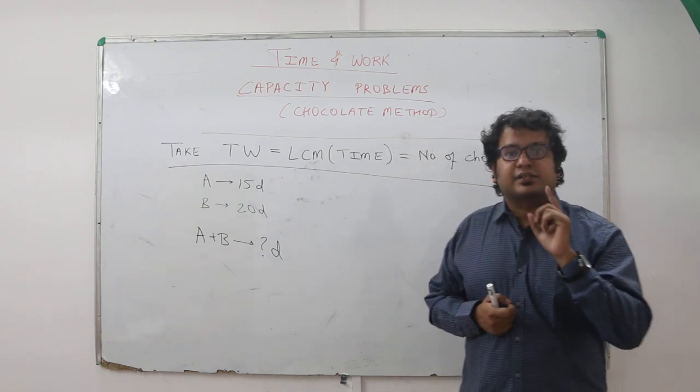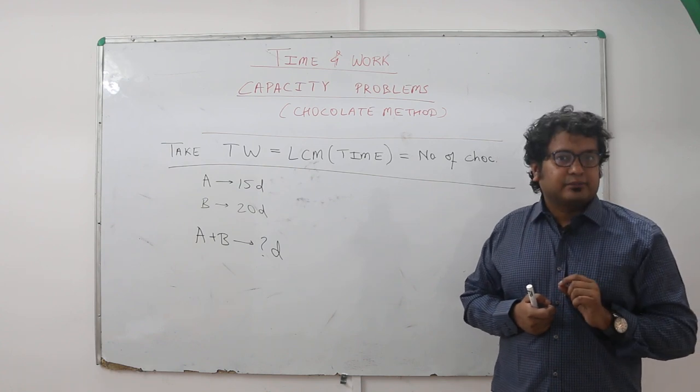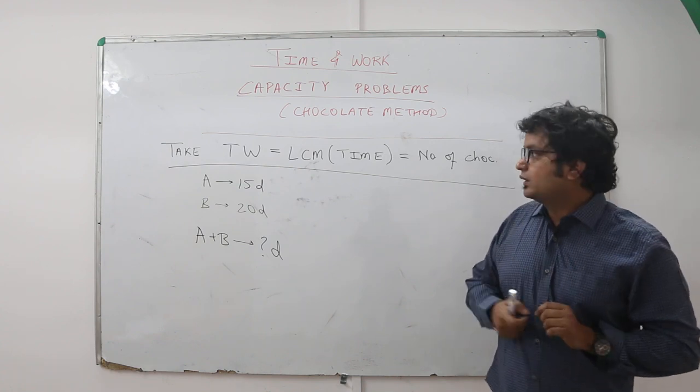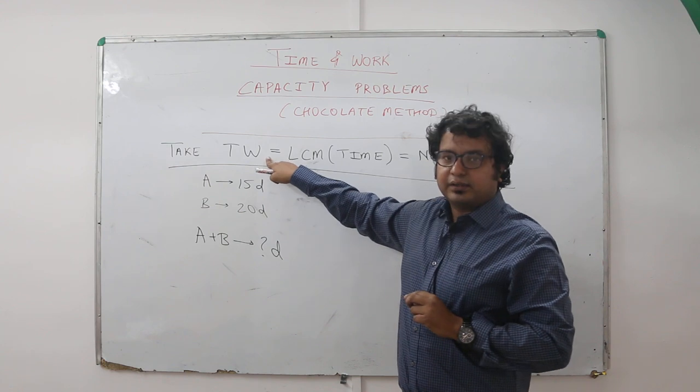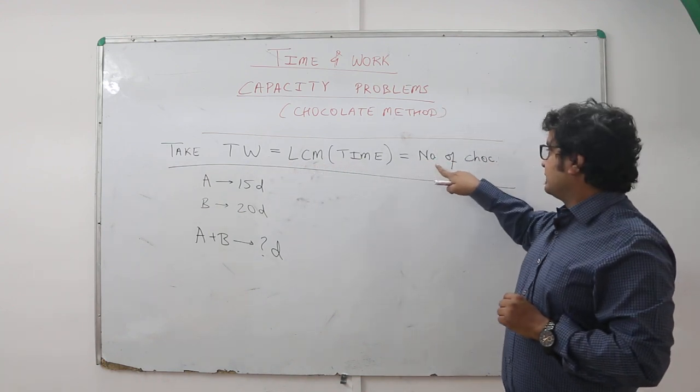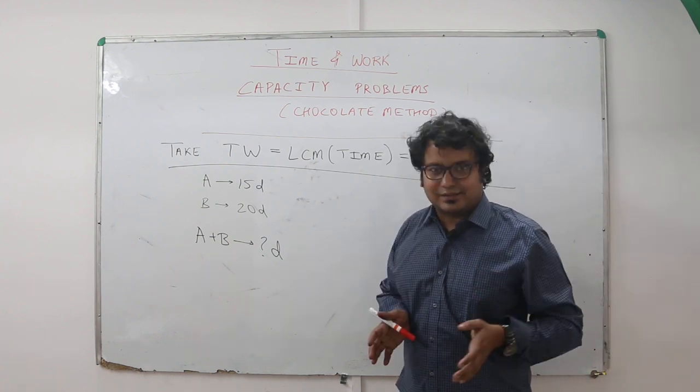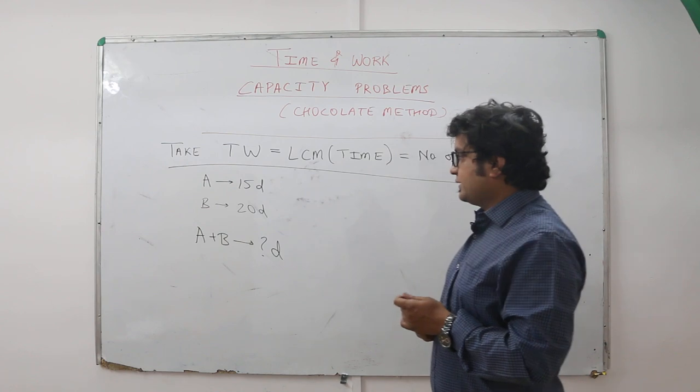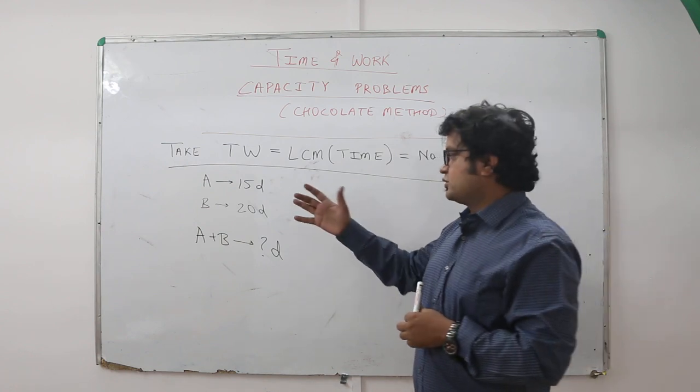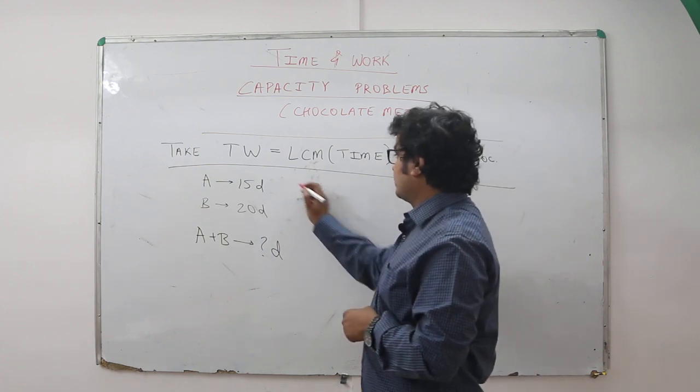So let me explain the method to you now. Take total work as equal to LCM of time - that is the number of chocolates. So what is work? The work is to eat chocolates. Next step: find individual work and then solve the question.